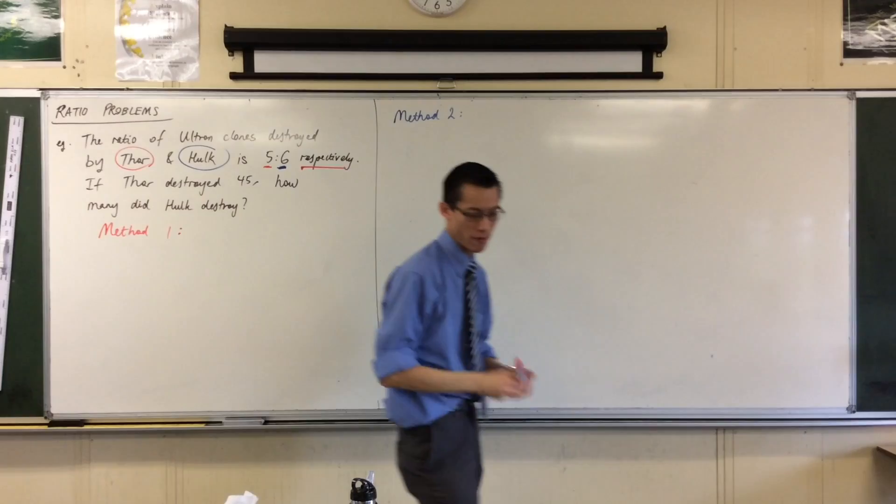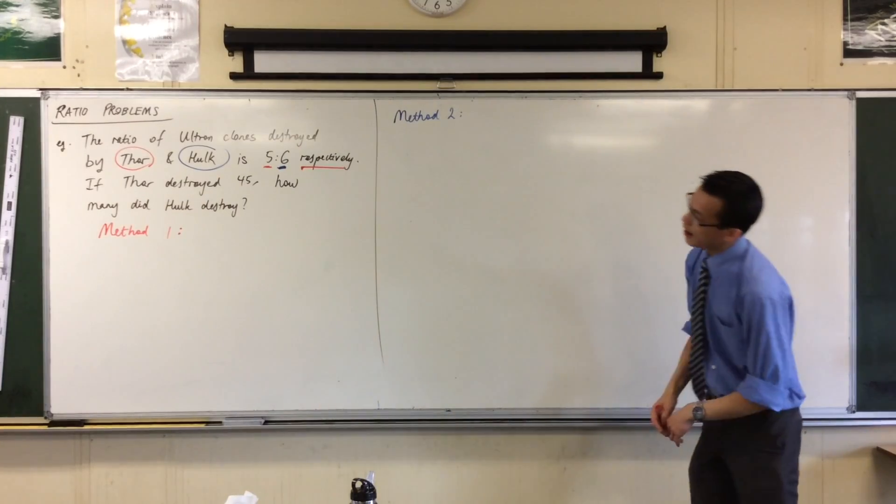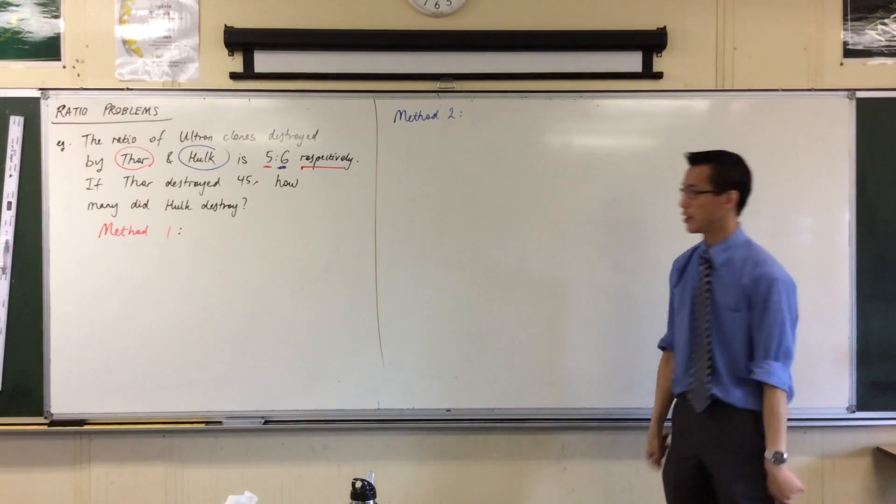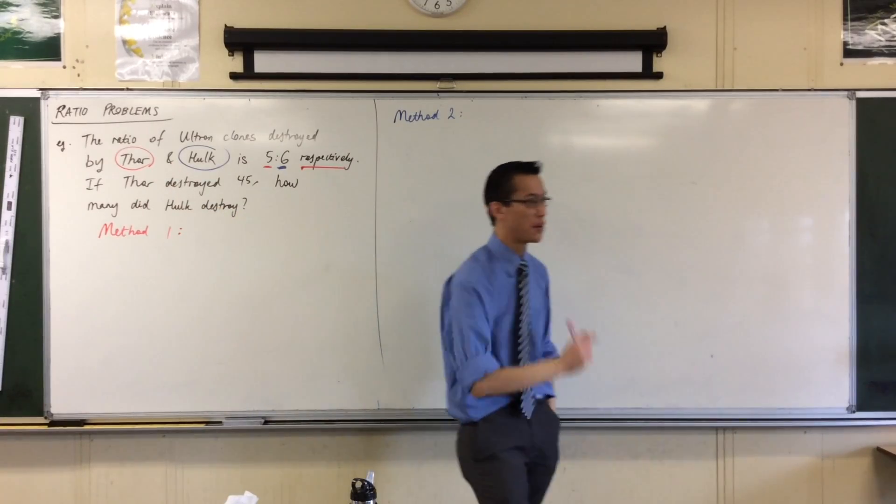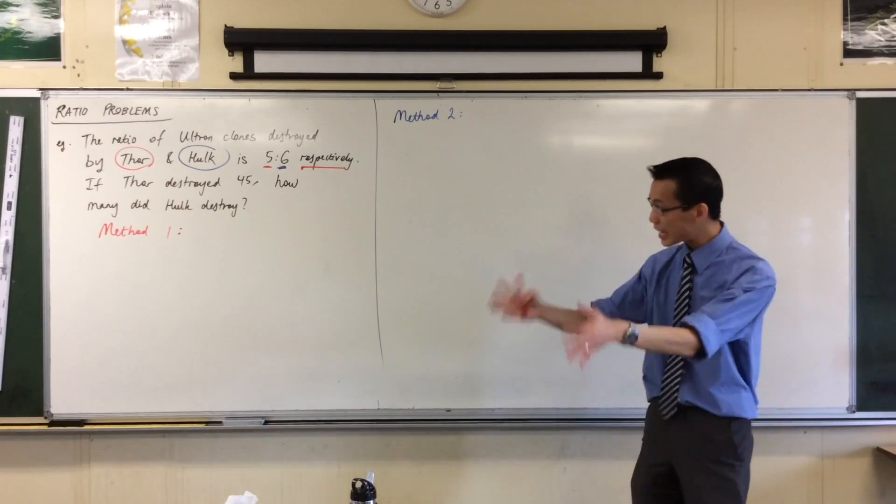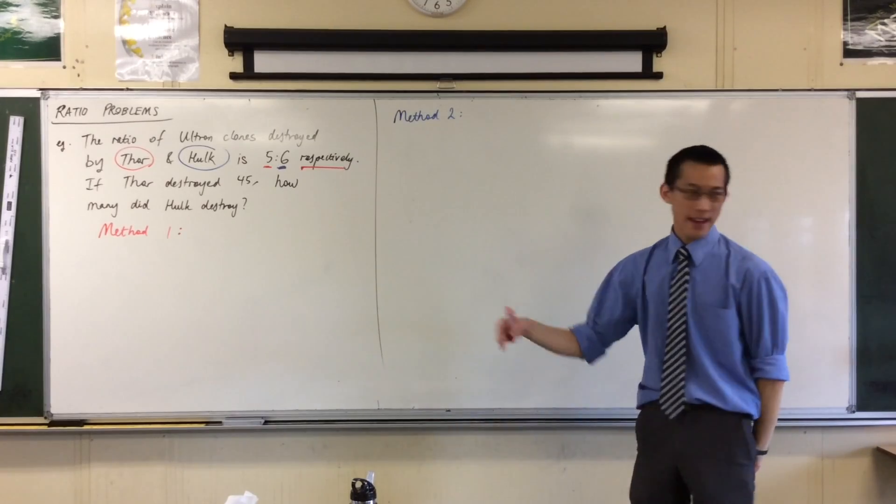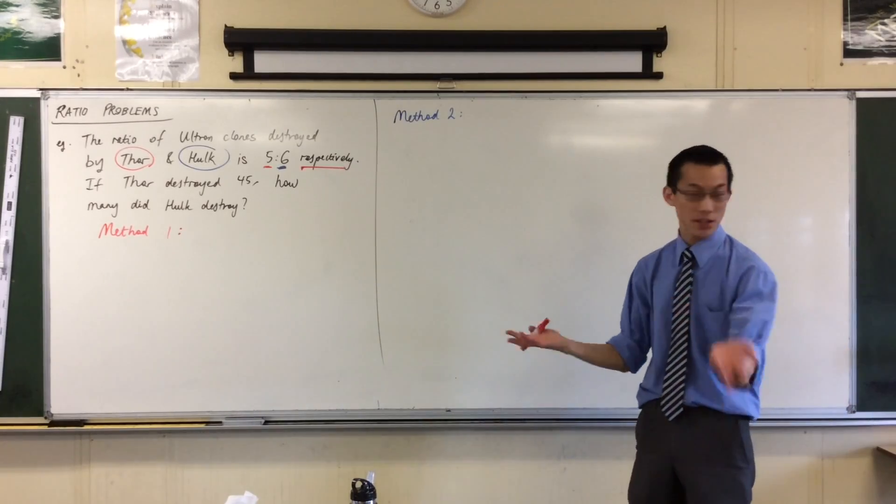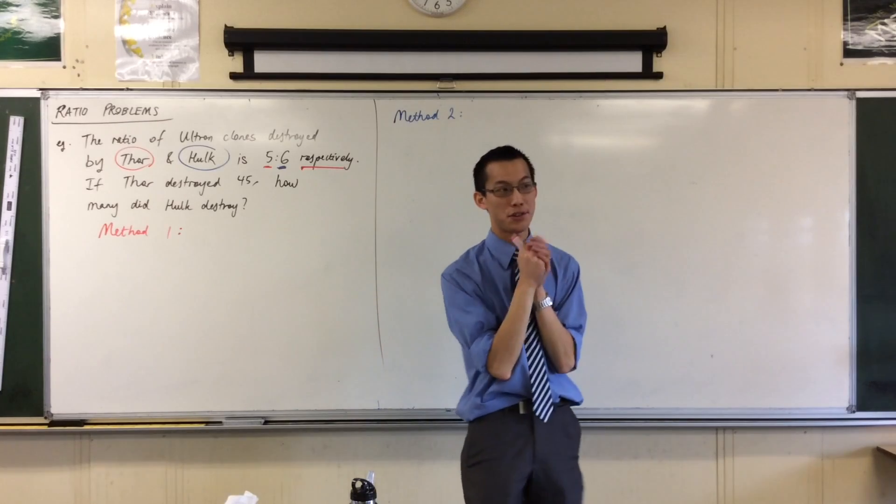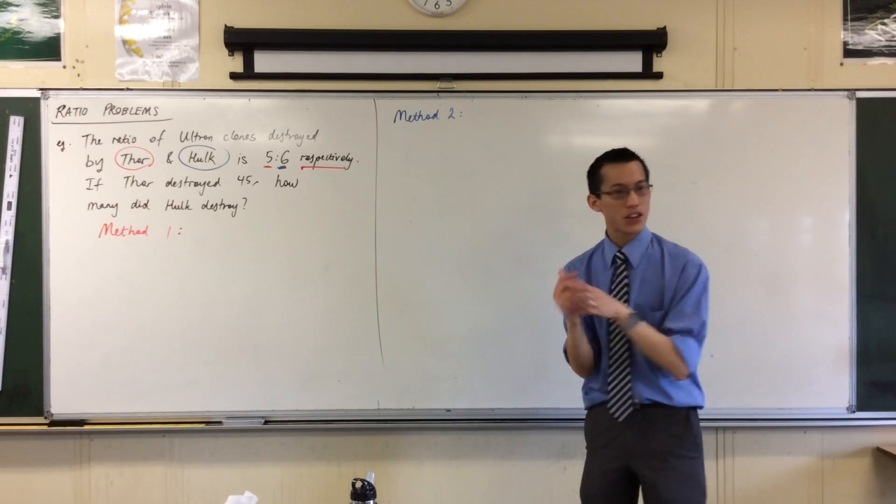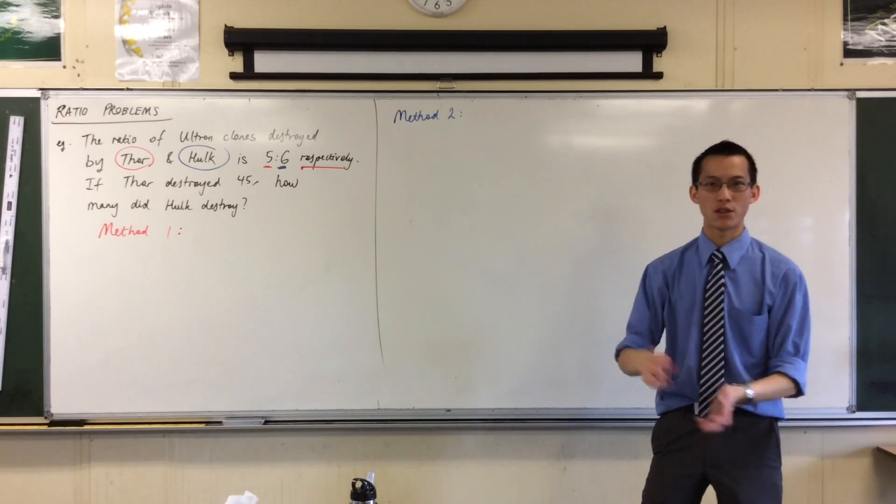So, it means that Thor gets five, and Hulk gets six. At least, that's the ratio. That's the comparison, and that's what respectively means. So, now we get a bit of extra information about the actual number, not the ratio, not the proportion, the actual number that Thor got. I'm going to show you two methods for this, which are both methods you've seen before, but maybe not in this context.